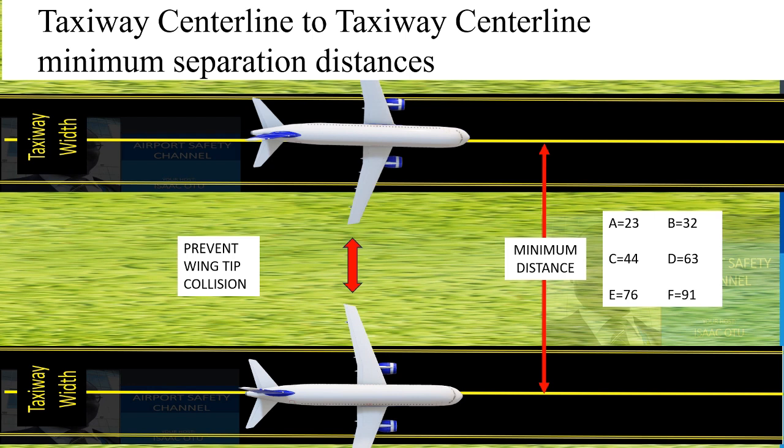You will observe that for taxiway centerline to taxiway centerline, it is not as cumbersome as compared to the taxiway and runway separation, because these ones are straightforward. This is easier to determine from table 3.1.